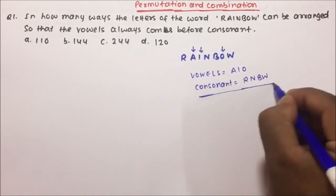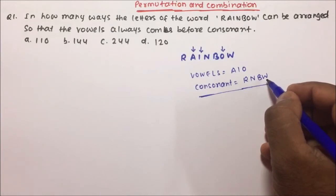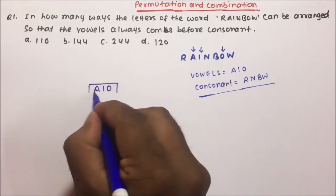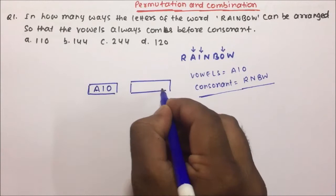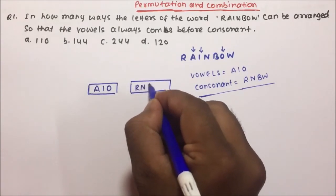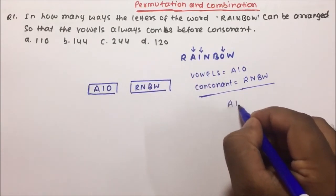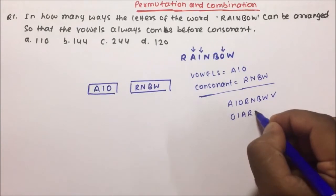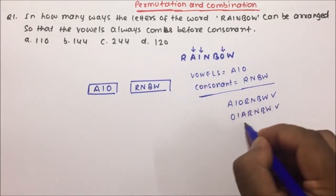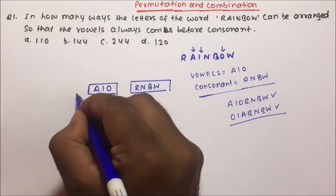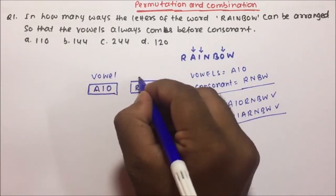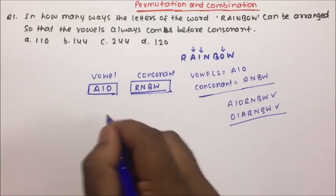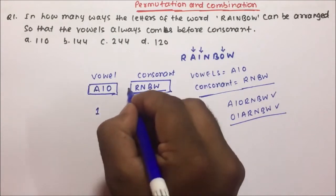Now friends, the condition is all the vowels should come before the consonants. That means all vowels should come first and then consonants should come later. So we can have a word like A-I-O-R-N-B-W, or O-I-A-R-N-B-W. The only condition is vowels come first and then consonants come later.